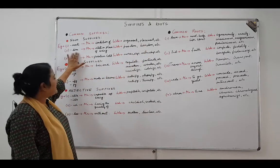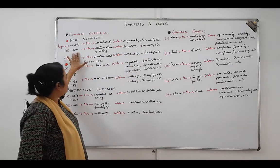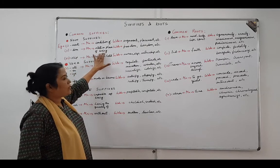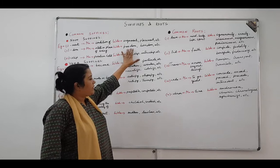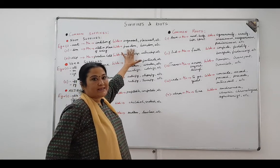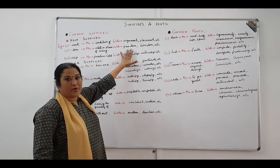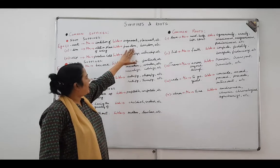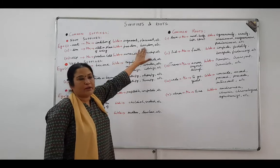The second noun suffix that we have picked up is dom, d-o-m, and the meaning is state or place of being. So when you are in any state or place, then you use the suffix dom. The words that we have picked are freedom, boredom.